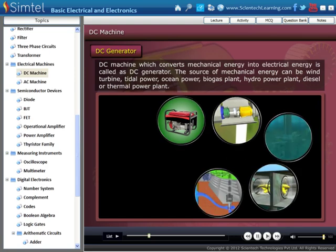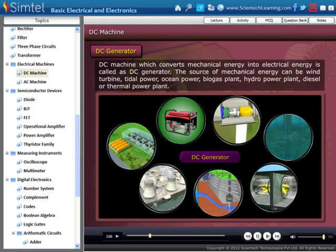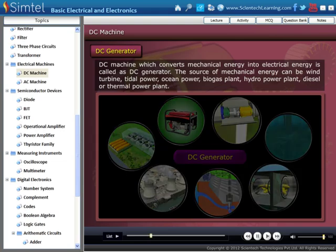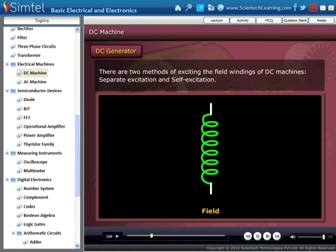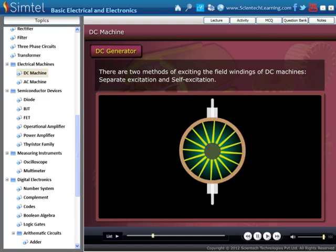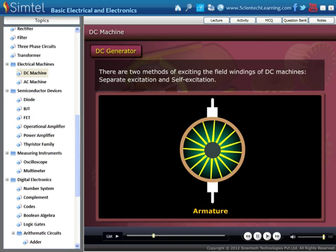Now we will learn types of DC generator. There are two methods of exciting the field windings of DC machines: separate excitation and self-excitation. DC machines may have one or more field windings, and their method of excitation determines the performance characteristics of the DC machines.